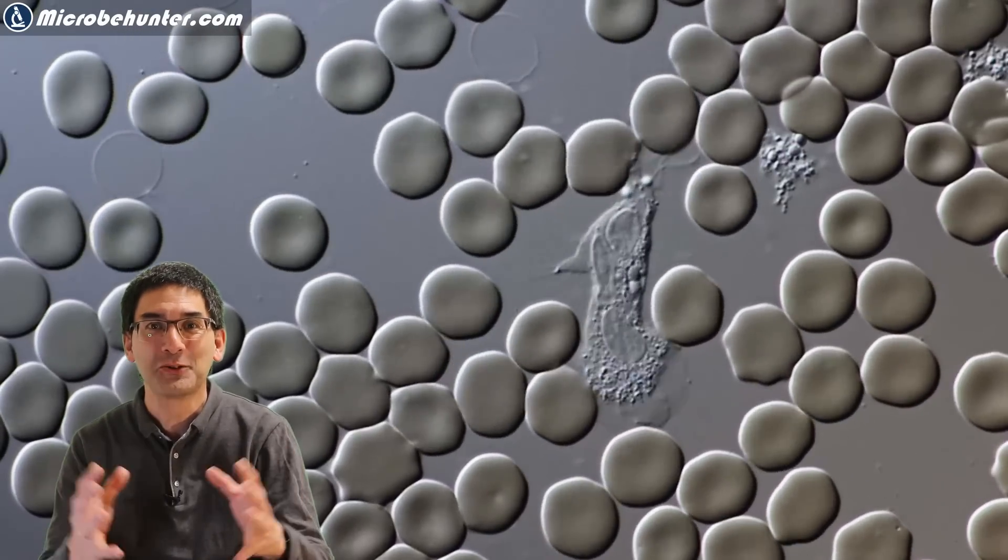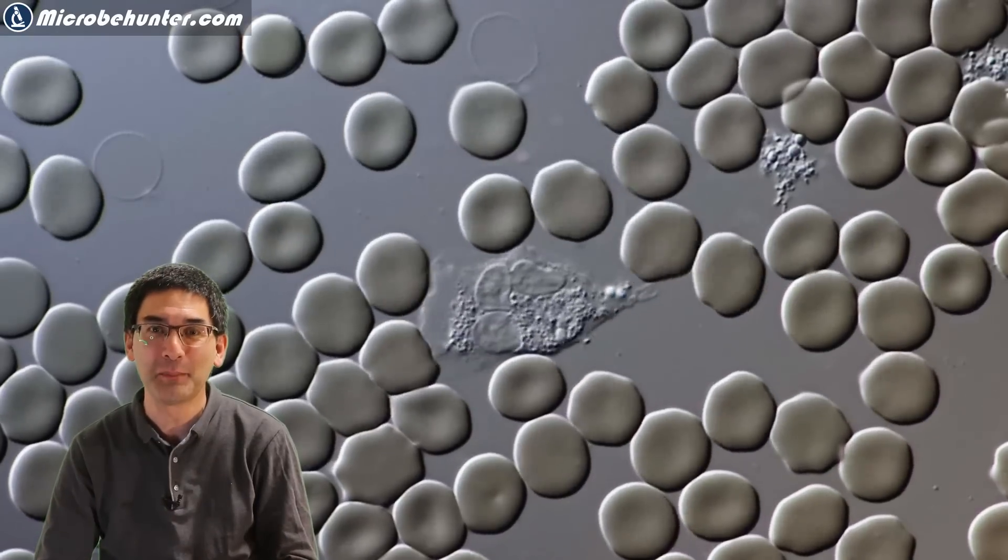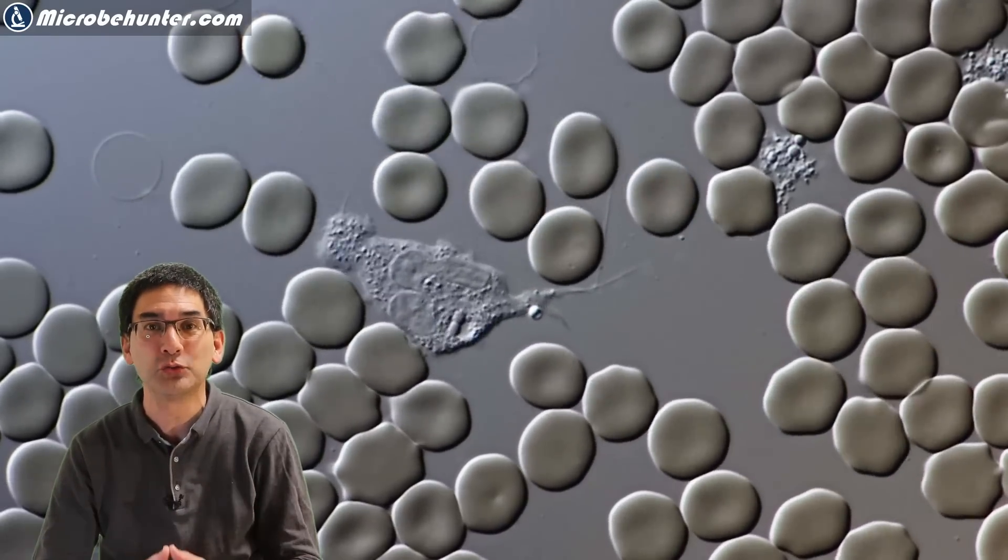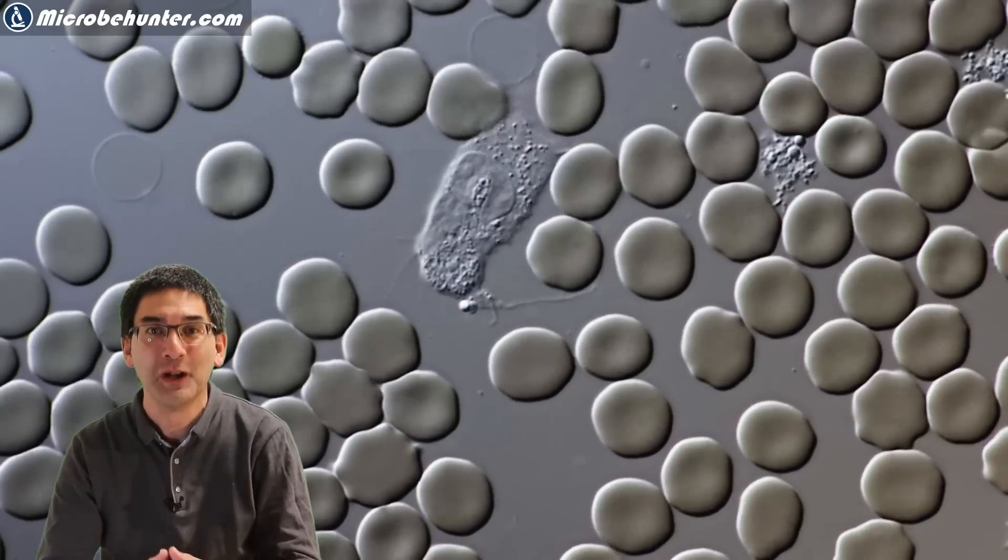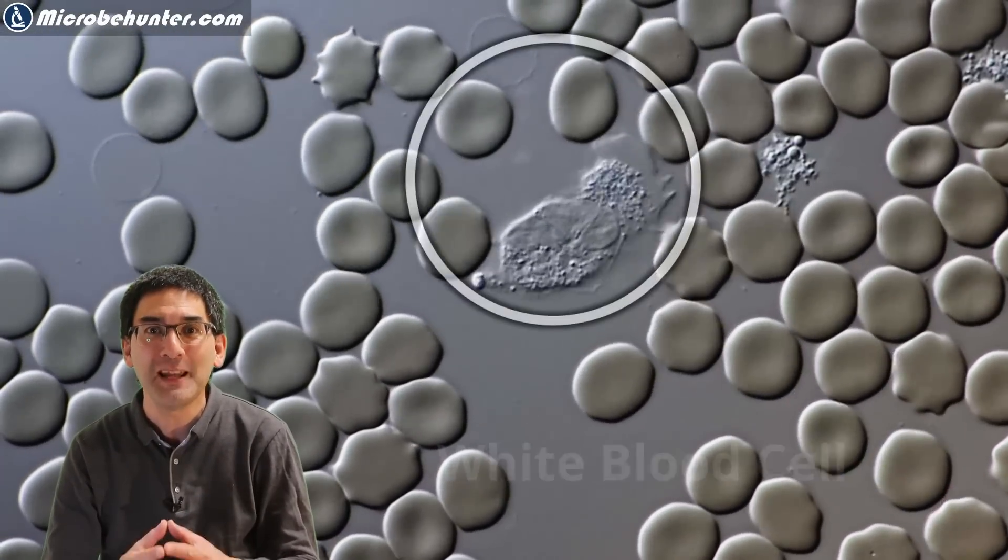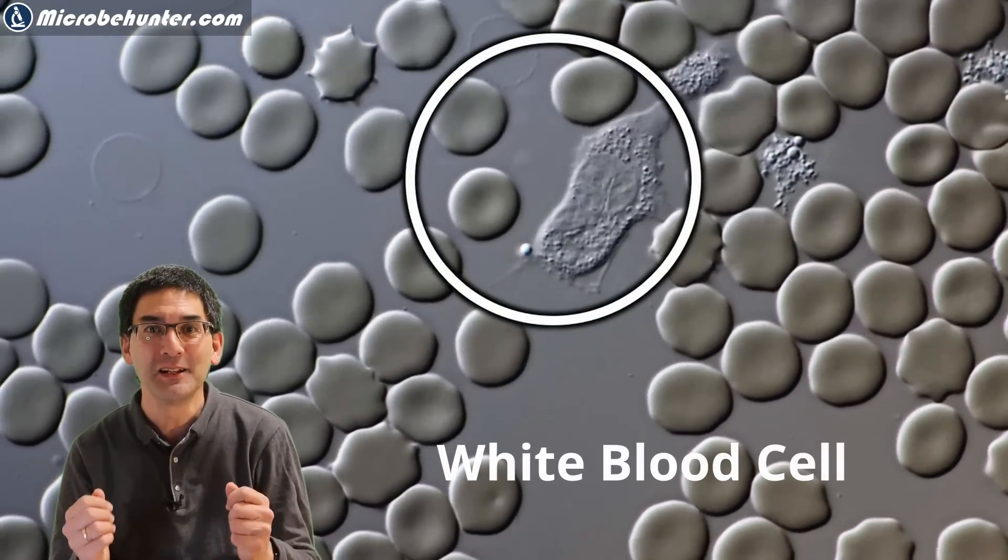Hi, microbe hunter here again. Today we have blood under the microscope, but not only red blood cells like you see over here, but also white blood cells, specifically phagocytes. These cells are part of our immune system and they eat up bacteria.